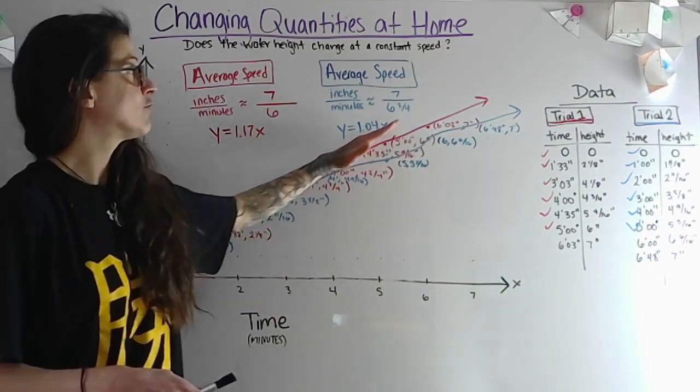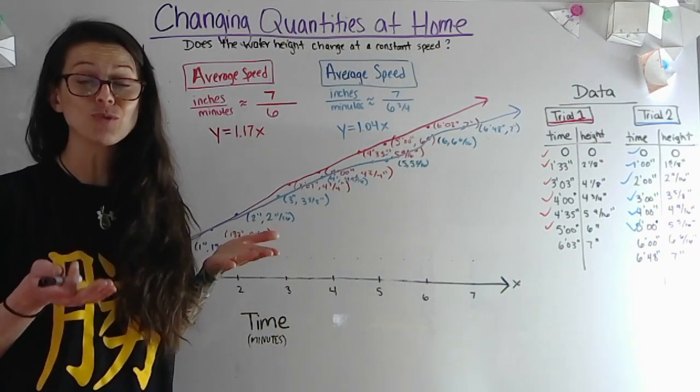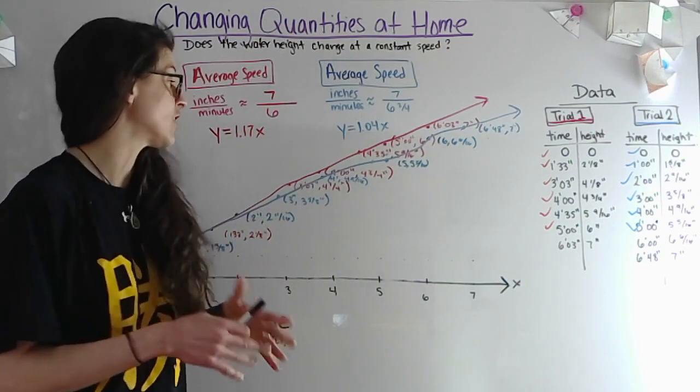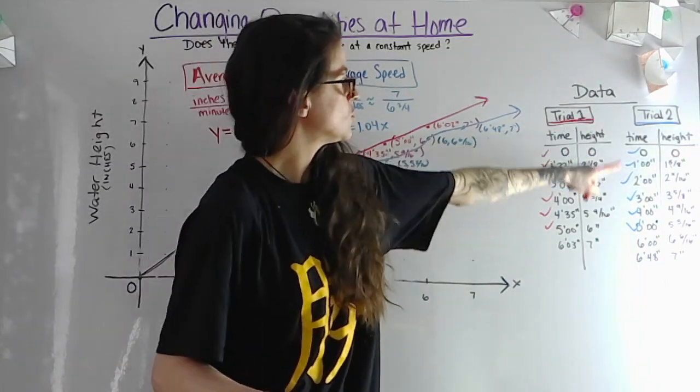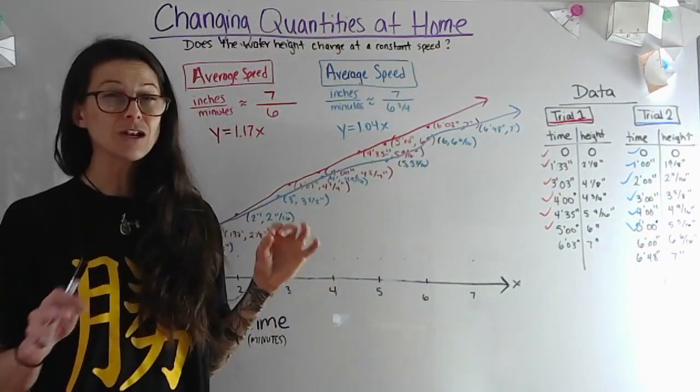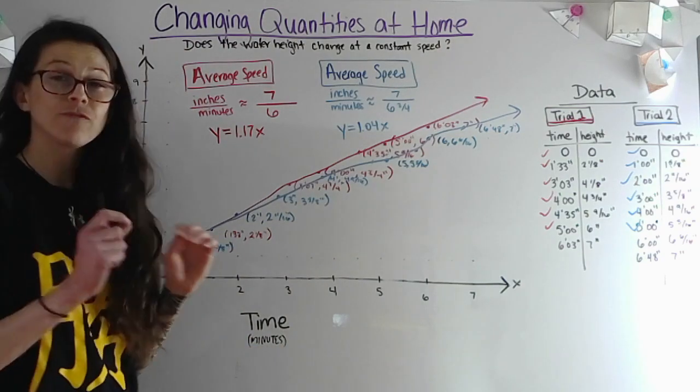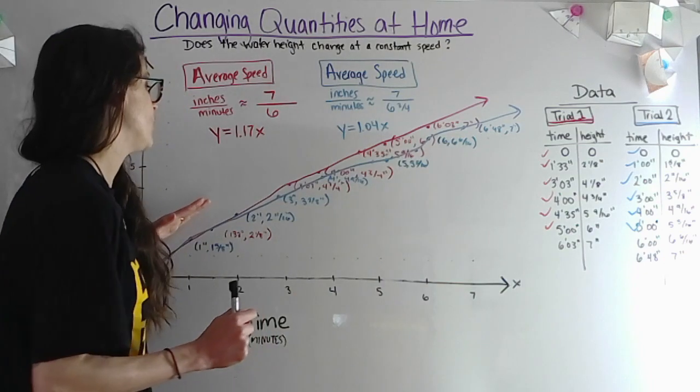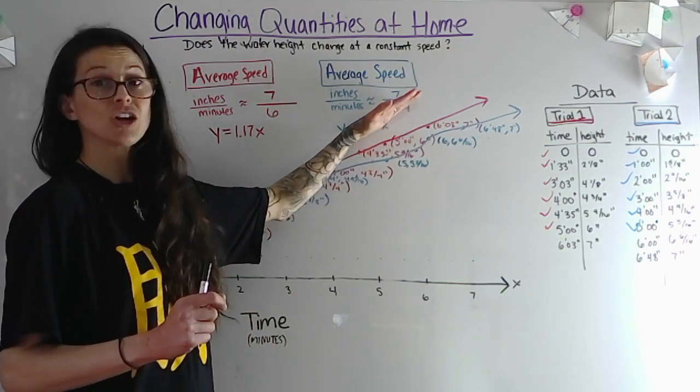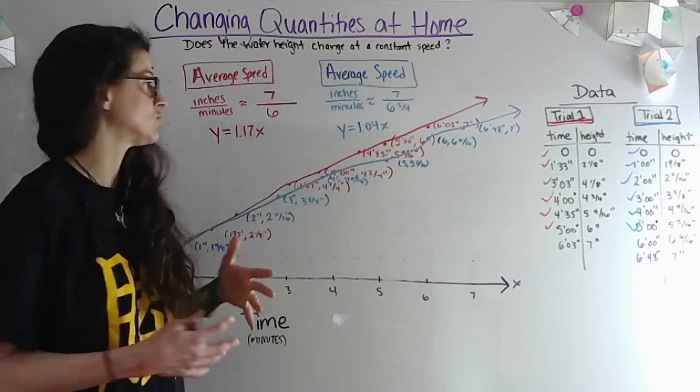The blue line shows the trial when I had very little dishes in the sink. So when there are few dishes in the sink it makes sense that the water fills at a slower rate than when the dishes are in the sink—the water fills at a faster rate.